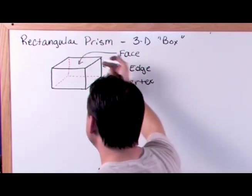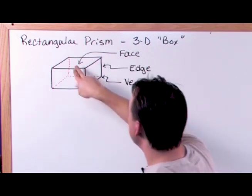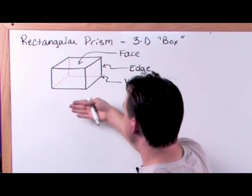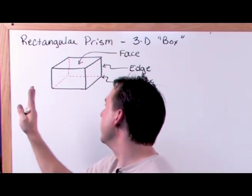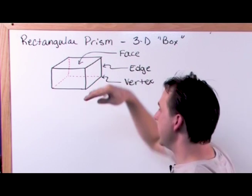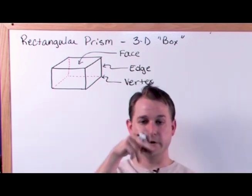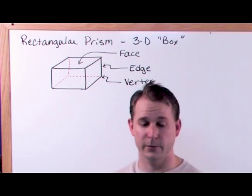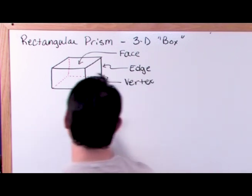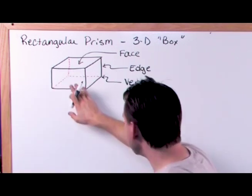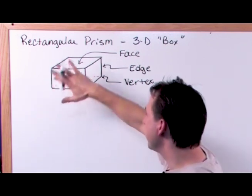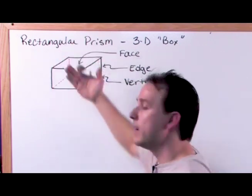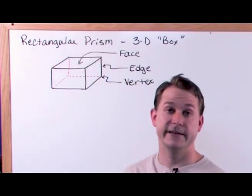Notice you have six faces on this shape. One face here, two, three on the bottom, four on the back, five on this side, and six on this side. So if you count all the sides, you'll find that every cube or every rectangular prism is going to have six faces. So how are we going to find the surface area? When I say the surface area of this prism, what we're trying to do is find the total surface area of all the faces added together.